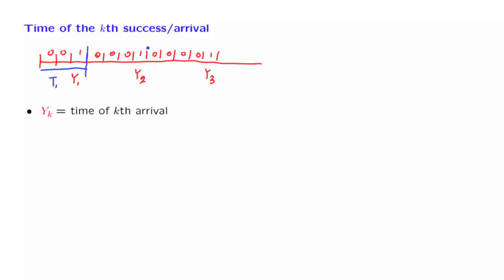Let us give a name to the time it takes from the first to the second arrival, and we call that time t2, which is the second inter-arrival time.